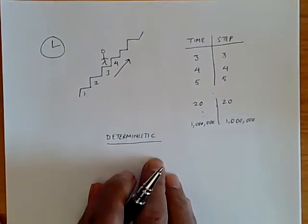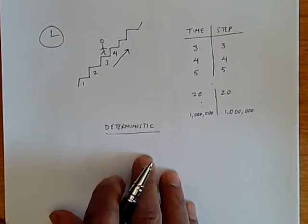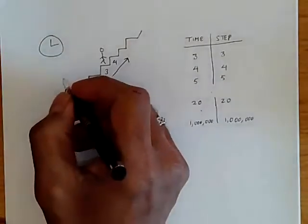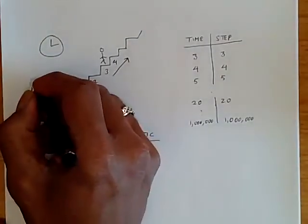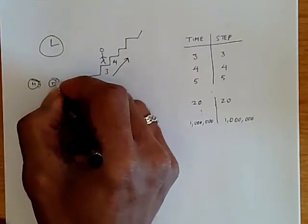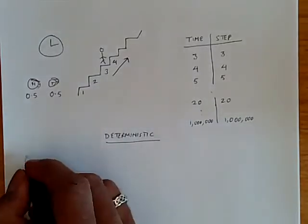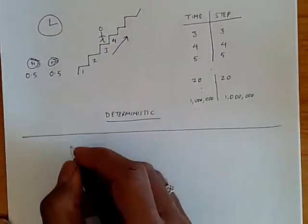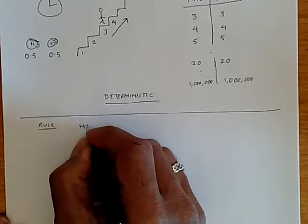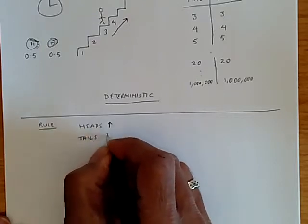Now, with a little bit of change, we can completely change the problem. So let's consider a slightly different problem. We still have the staircase, we still have the person on step 3. But what we're going to do is give them a coin, which can be either heads or tails. And it can be heads with probability 0.5, or tails with probability 0.5. And we're going to add a rule. The rule is that if the coin comes up heads, then they'll go up by one staircase. If it comes up tails, they'll go down by one step.